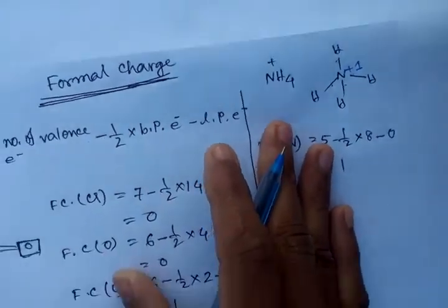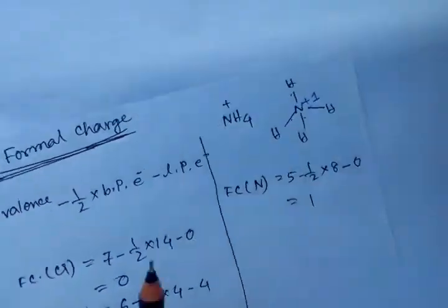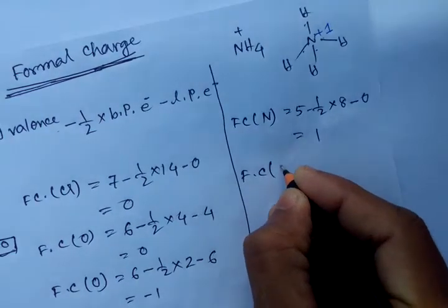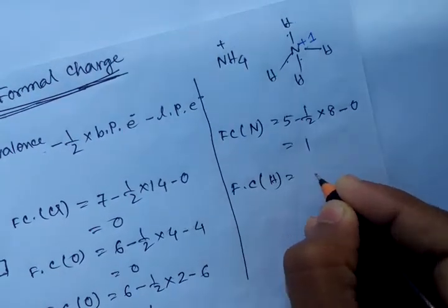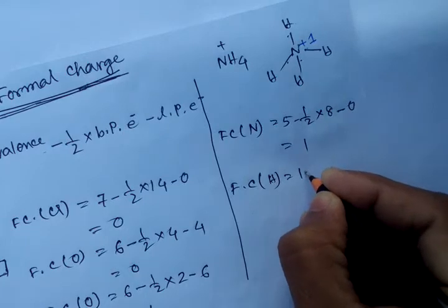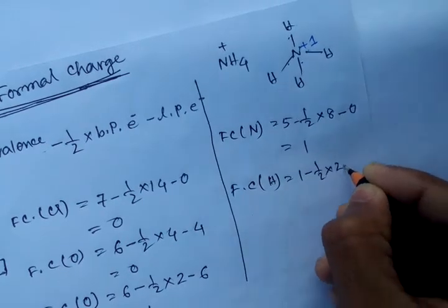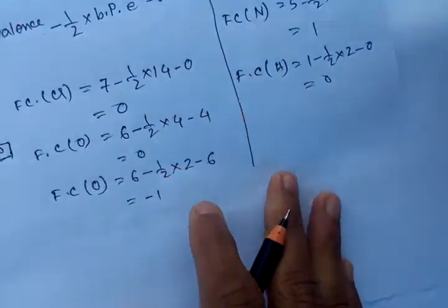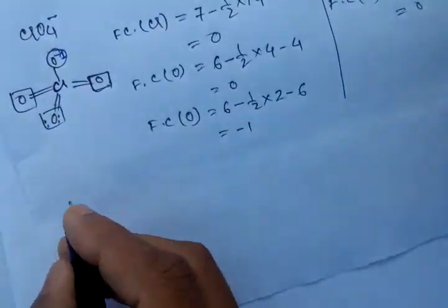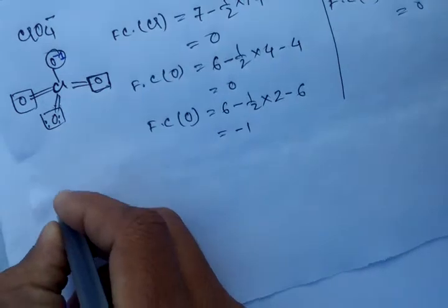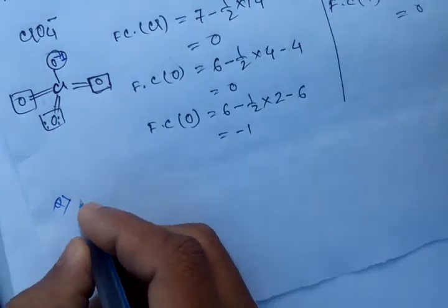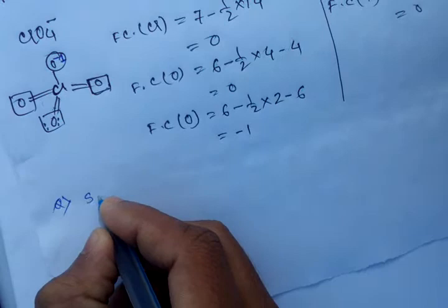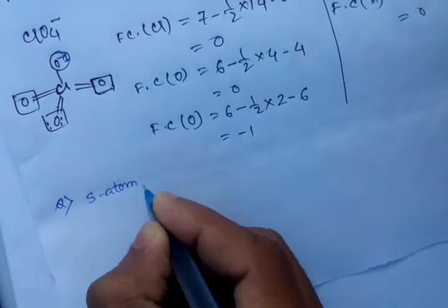So formal charge on nitrogen is plus one. Also, the formal charge of hydrogen: valence electrons of hydrogen one, minus half times bonded electrons two equals one, minus lone pair zero, equals zero. So hydrogen has a formal charge of zero. Now let's solve a question: calculate the formal charge of the S atom in SO2 and SO3.